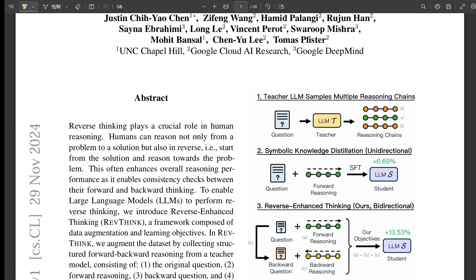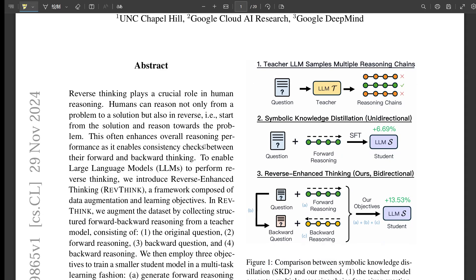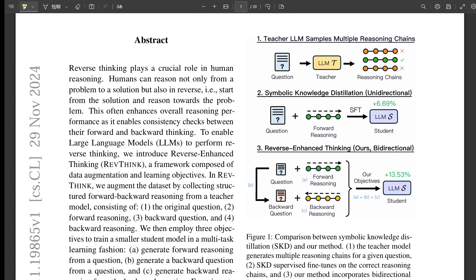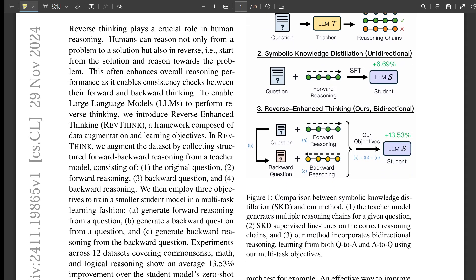That's what this research paper we're diving into today is all about: reverse thinking makes LLMs stronger reasoners. They found that they could get these large language models to get way better at reasoning just by incorporating this reverse thinking into how they're trained. So they're basically trying to take something that humans do naturally and use that to make AI even better.